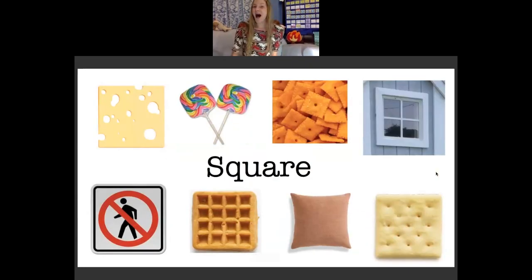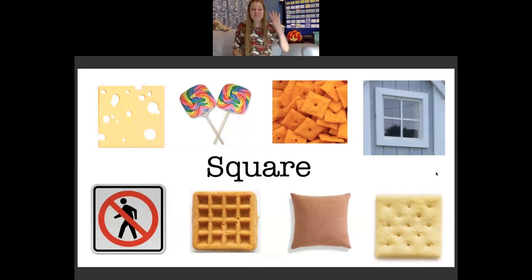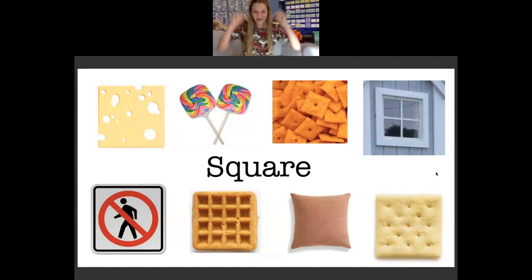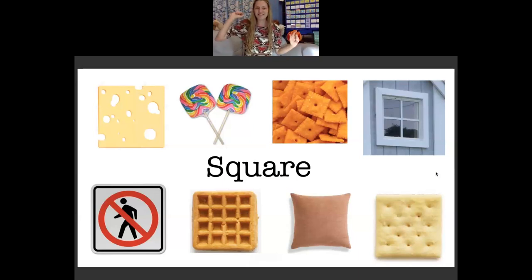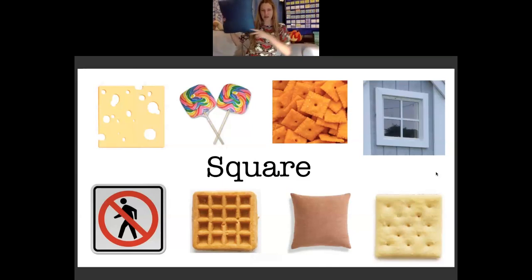A square — that's right. This shape is a square and a square has four sides and four corners. If you look at any of the examples on your screen right now, you can see the cheese or the Cheez-Its, those lollipops, windows or squares, waffles, pillows, crackers — all examples of squares.